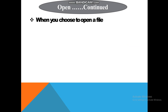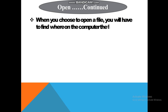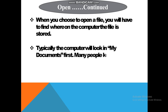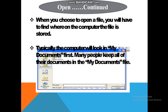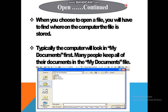When you choose to open a file, you will have to find where on the computer the file is stored. Typically the computer will look in My Documents first — many people keep all of their documents in the My Documents folder. जैसे हम किसी बच्चे को बोलें अपनी IT की copy दे दो तो वो bag में से ढूंढेगा — ऐसे ही Open click करने पर देखना है कि file computer में कहाँ store है। By default जो documents save होते हैं वो My Documents folder में होते हैं, जब तक कहीं और save न किया हो।